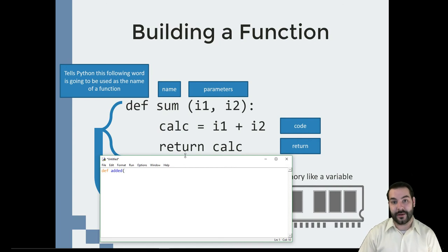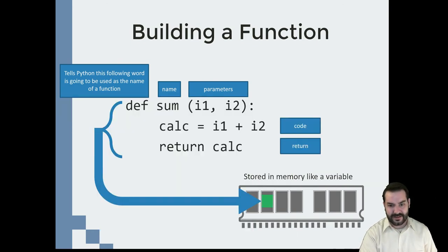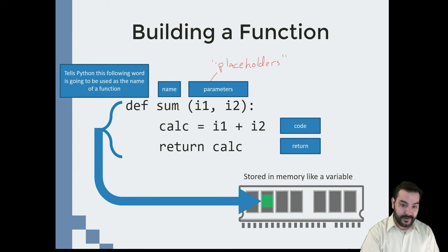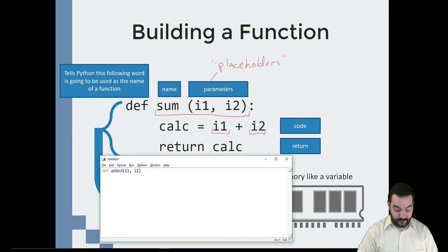Now I have to give it some of those parameters. In my case, I named it I1, I2. Now those parameters, the way you can think about them, how I consider them, is I classify them as placeholders. I don't know what I2 and I1 are, and frankly I don't care, but I'm going to assume that by the time someone uses this function that I'm designing, they're going to give me what I2 and I1 represent. So I come in and say calc equals I1 plus I2, that's it.